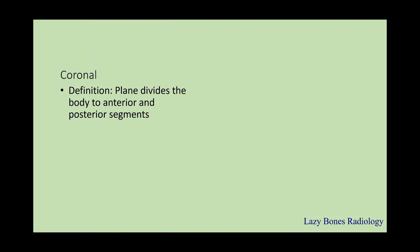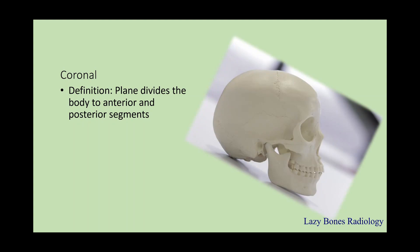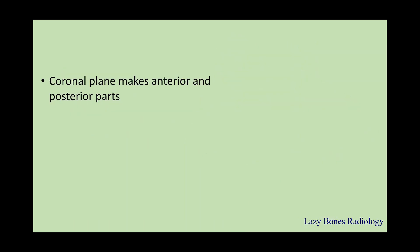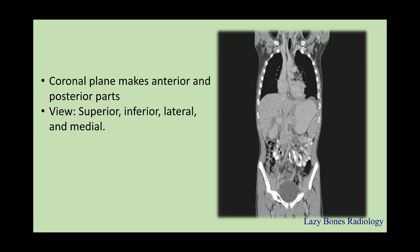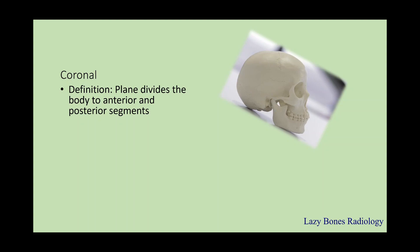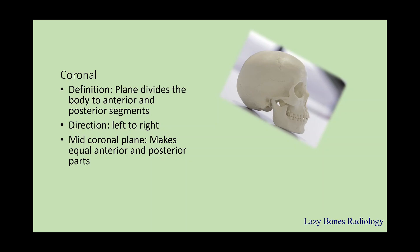Next, the coronal plane. This is the plane that divides the body into anterior and posterior parts. Looking at the skull from anterior to posterior, this is a 90-degree difference from a sagittal plane. When looking at a coronal plane, as you can see here, we're able to identify structures superiorly, inferiorly, and lateral and medial. It is very important that you know how to identify structures when looking at a coronal plane. Like the mid-sagittal plane, the coronal plane also has a mid-coronal plane. Coronal planes divide the body from anterior to posterior segments; the mid-coronal plane makes equal anterior and posterior parts, also known as the mid-axillary plane.